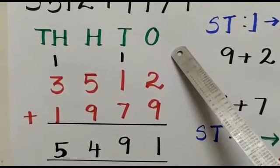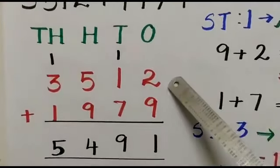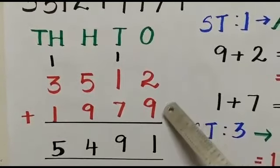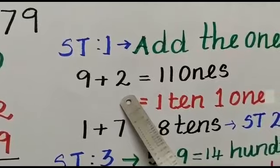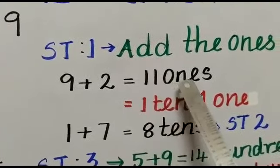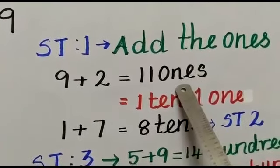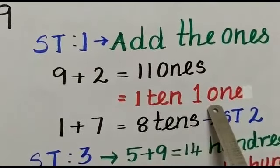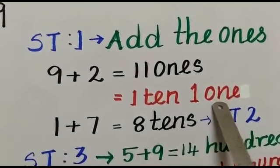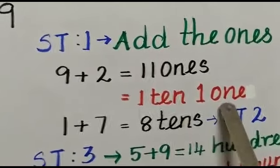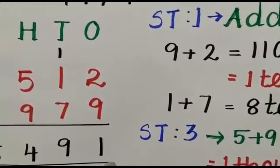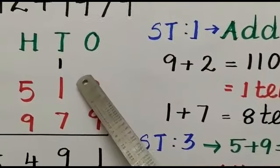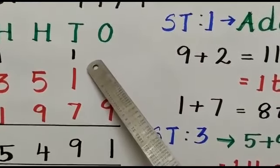So in the ones column you have 2 and 9. When we add the digits 2 and 9, 9 plus 2 is equal to 11 ones. 11 ones is nothing but 1 ten and 1 one. So we will write 1 one in the ones column and 1 ten will be carried forward to the tens column.